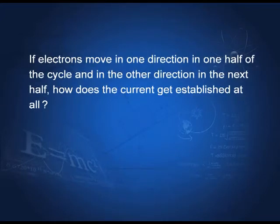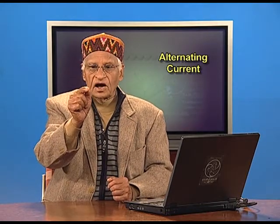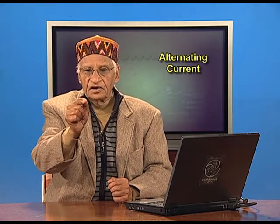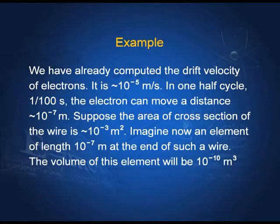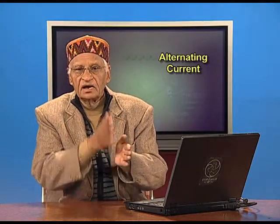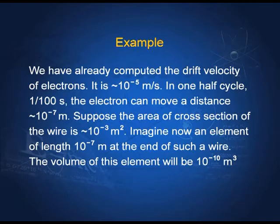The question arises: if electrons move in one direction in one half of the cycle and in the other direction in the next half, how does the current get established? Instead of answering directly, let us make a simple calculation. We have already computed the drift velocity of electrons — it is about 10⁻⁵ meters per second, that is a few millimeters per second. In one half cycle — say one hundredth of a second, since in India the supply is 50 Hz, each cycle is one fiftieth of a second, so a half cycle is one hundredth of a second — the electron can move 10⁻⁵ × (1/100) = 10⁻⁷ meters.